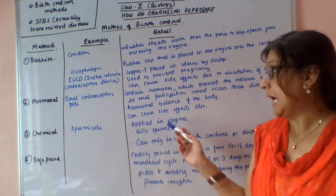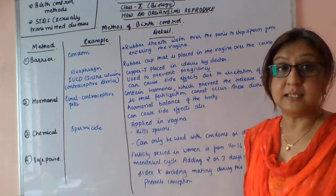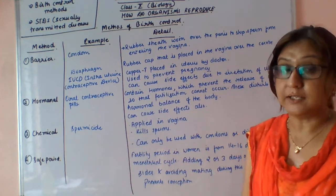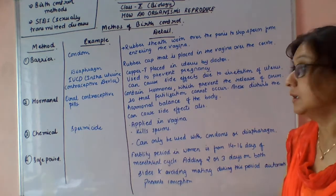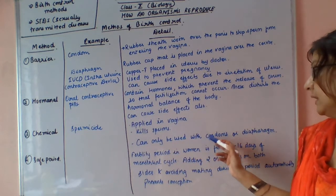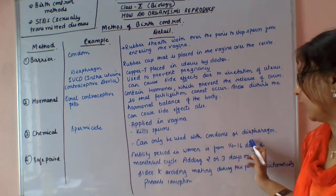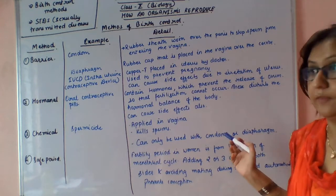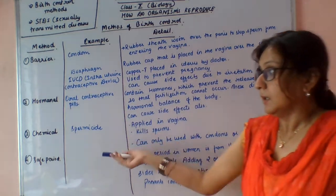Next is the chemical method. Spermicides are applied in the vagina to kill the sperms. They can be used with condoms or a diaphragm.